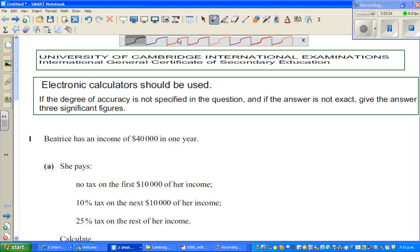Let us look at some examples on percentage, ratio, and proportion. These questions I have taken from the University of Cambridge International Examination. You can use an electronic calculator. And if the degree of accuracy is not specified in the question, and if the answer is not exact, give your answer in three significant figures.